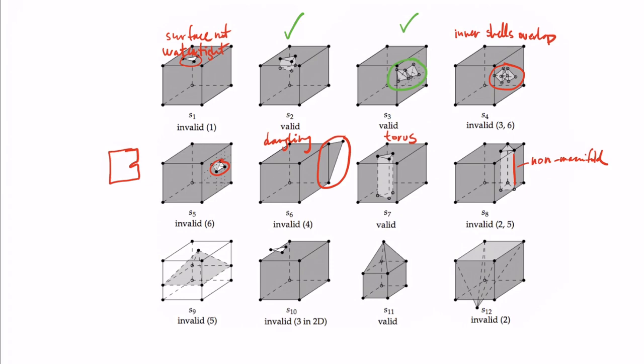Now if we move to the last row we have S9 which is invalid so S9 is formed by one exterior shell and one interior shell but this interior shell is basically disconnecting the interior of the solid so it means that we end up with two different volumes one above the pyramid and one under which is not allowed so the solid is invalid.